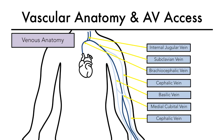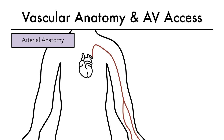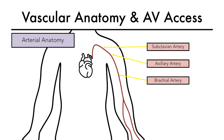Arteries are simpler as far as dialysis access is concerned and are shown in red in this video. The subclavian artery becomes the axillary artery in the upper arm, which then continues down as the brachial artery. This is often used for access in the arm to create, for example, a brachiocephalic or a brachiobasi­lic fistula. The brachial artery at the level of the antecubital fossa divides into the radial and ulnar artery.